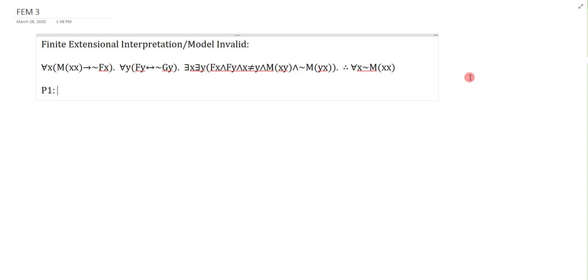So the first premise: for all x, M(x,x) arrow not F(x). Nothing tricky about this. It just says if you M yourself, then you're not an F. That's pretty straightforward.